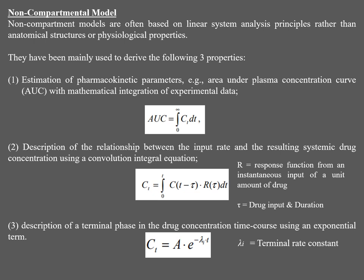The convolution equation gives: C(T) = integral from 0 to T of C(T minus tau) times R(tau) dT, where tau corresponds to drug input duration and R is the response function from an instantaneous unit input of drug. The third property is an equation for the terminal phase in the drug concentration-time course, given by an exponential term: C(T) = A times e to the power of minus lambda_i times T, where lambda_i is the terminal rate constant, A is the coefficient, and C(T) is concentration at time T. That's all about the non-compartment model.